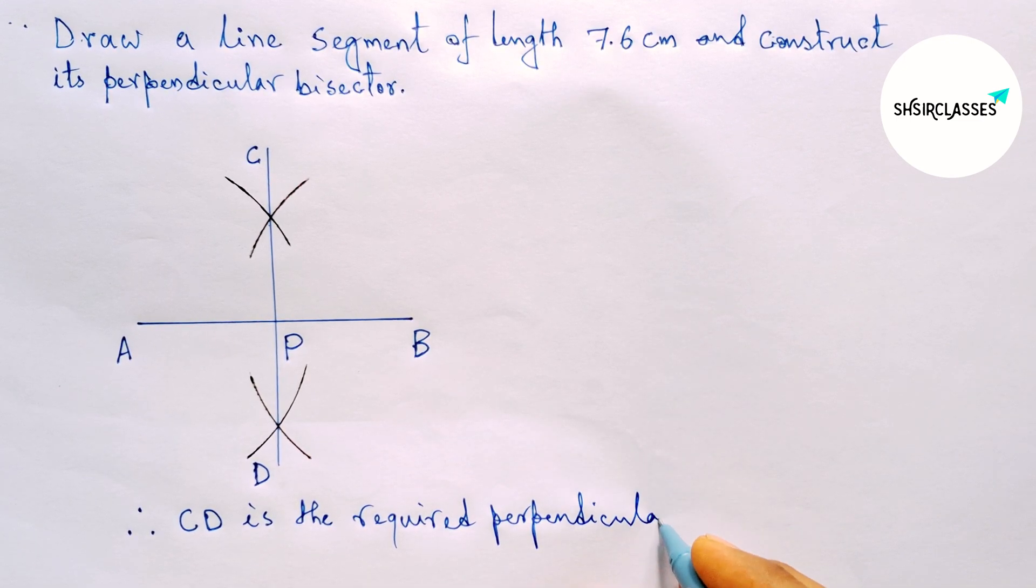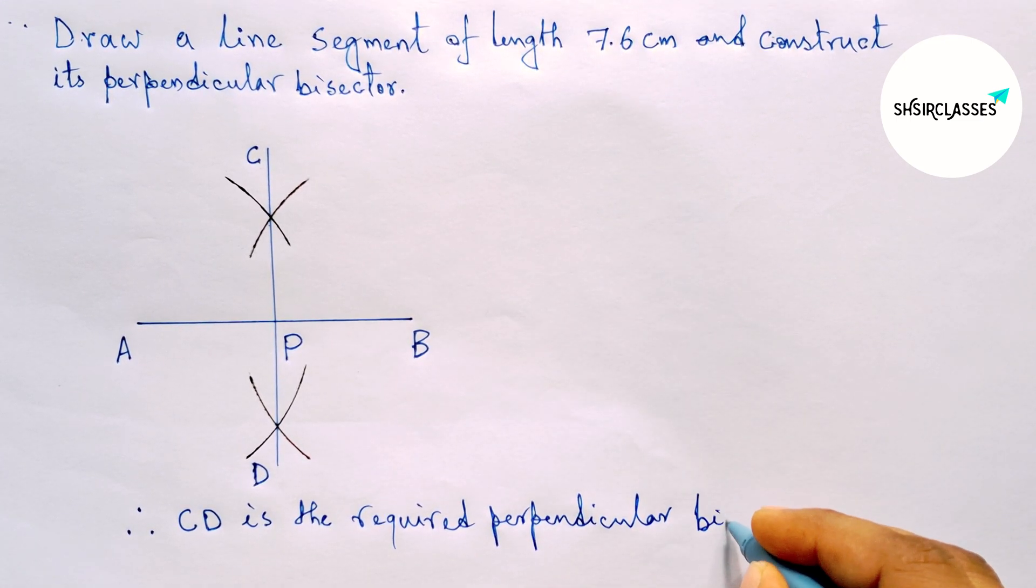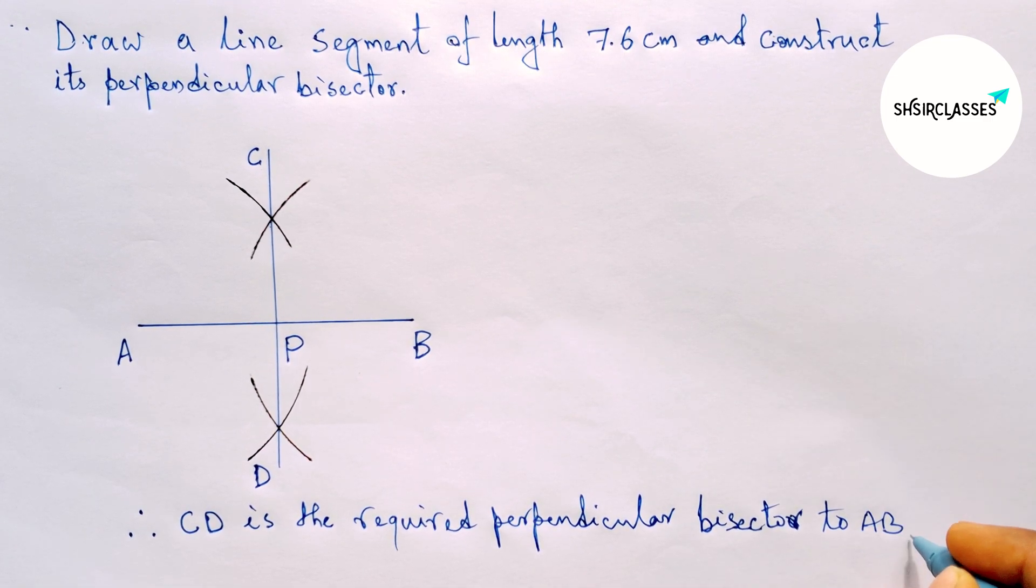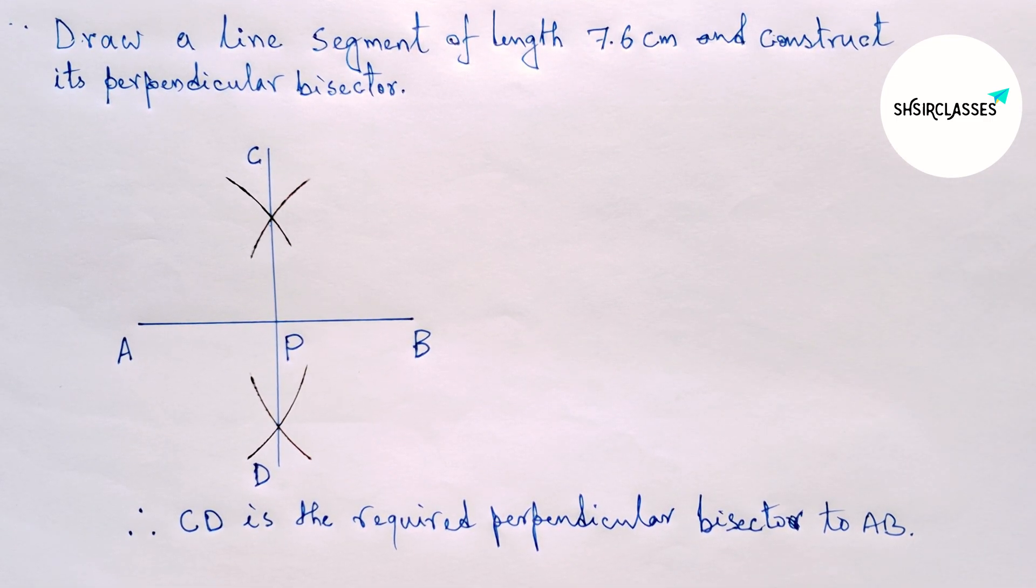AB equals 7.6 centimeters, and by this way you can construct a perpendicular bisector in an easy way. That's all, thanks for watching. Please share it.